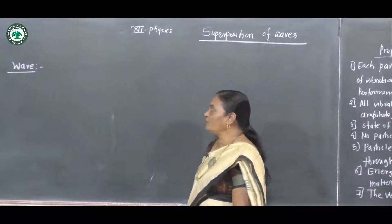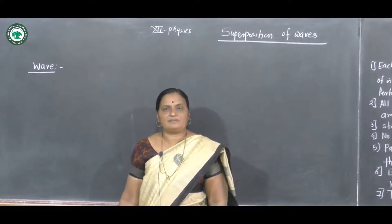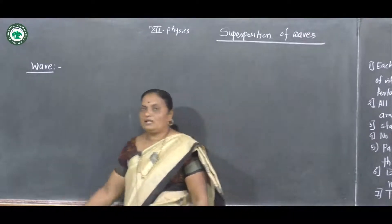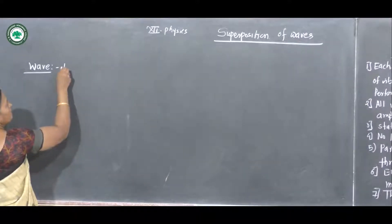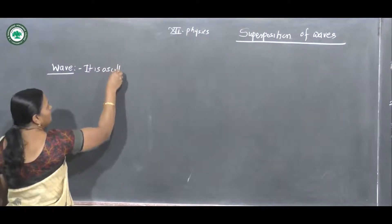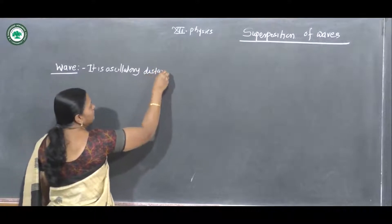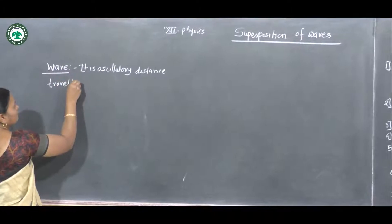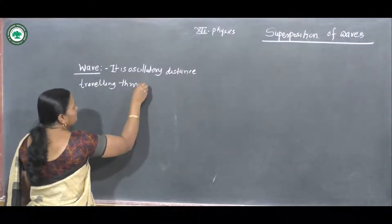Initially we see what is a wave. A wave is defined as an oscillatory disturbance travelling through a medium.